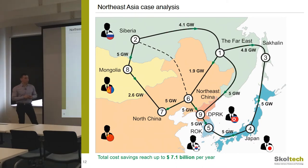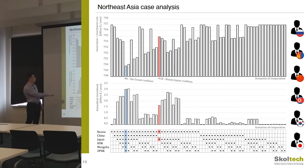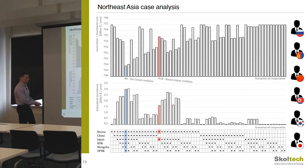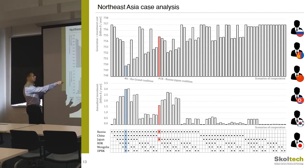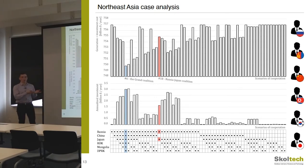Regarding what a single-dot scenario means: the first scenario with only one dot means no cooperation — essentially no investment and no savings. Scenarios where two geographically separated countries appear together, like Mongolia and North Korea, yield zero savings because the model sees the topology and finds nothing beneficial — their cooperation results in zero savings, equivalent to no cooperation.